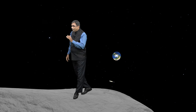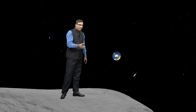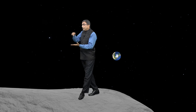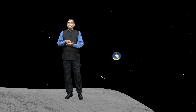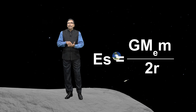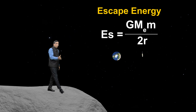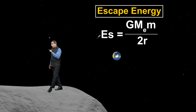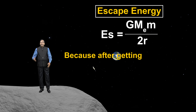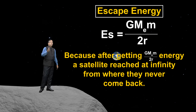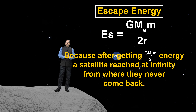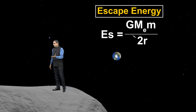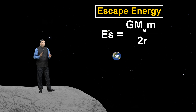Once you put a satellite from its orbit to infinity, it never comes back to its orbit or to Earth's surface — it escapes from its orbit and escapes from Earth's gravity. That is why this energy — G Mₑ m upon 2r — is also known as escape energy. This binding energy of a satellite is also known as escape energy. So the escape energy of a satellite Eₛ is also equal to plus G Mₑ m upon 2r.